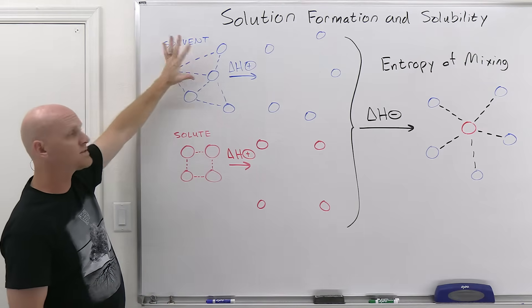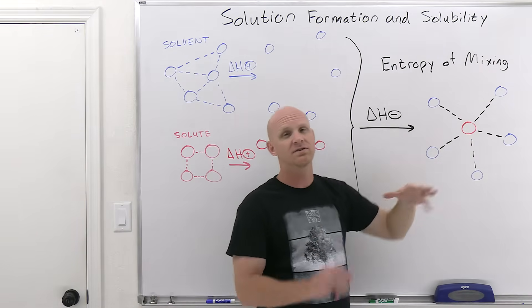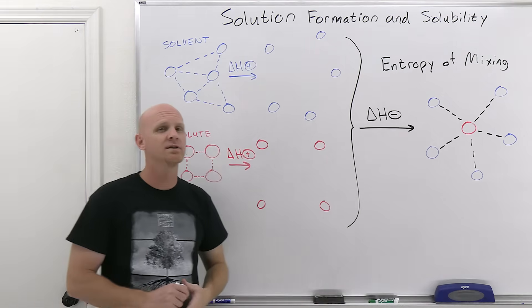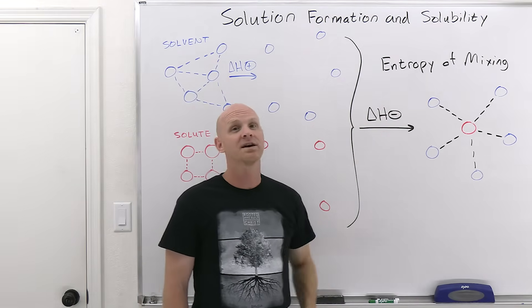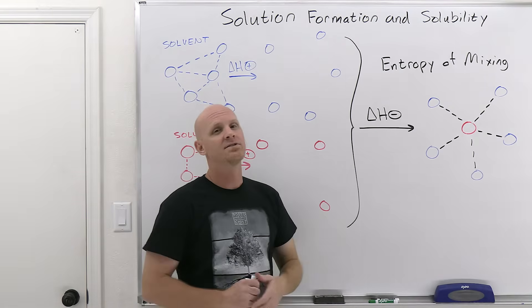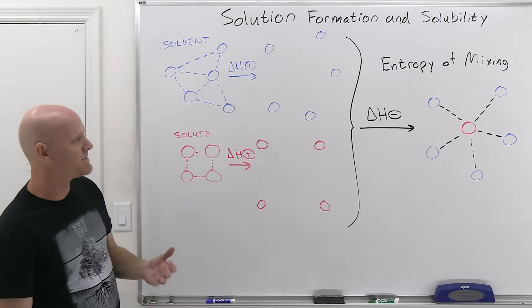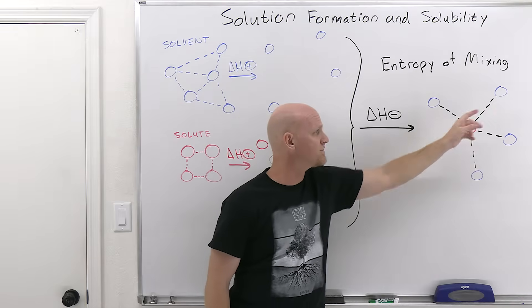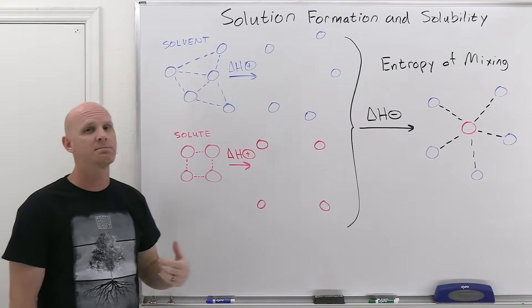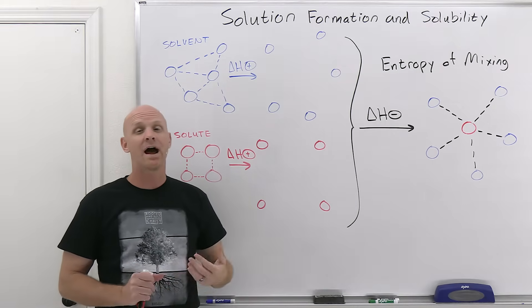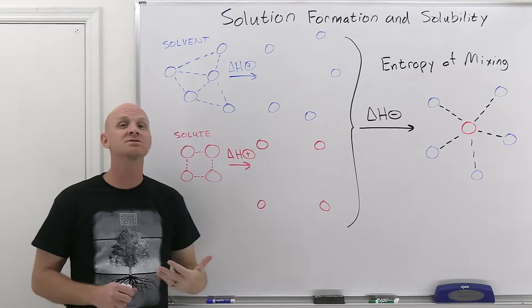The way this works: you get an increase in entropy when you get a mixture. Initially we start out with pure solvent and pure solute, and there's not as much randomness there as when they're actually mixed together. That's usually the driving force between a solute and a solvent mixing — this entropy of mixing. The big thing here is you really need delta H to not be hindering the spontaneity of the process, so you want delta H to come out as close to zero as possible.